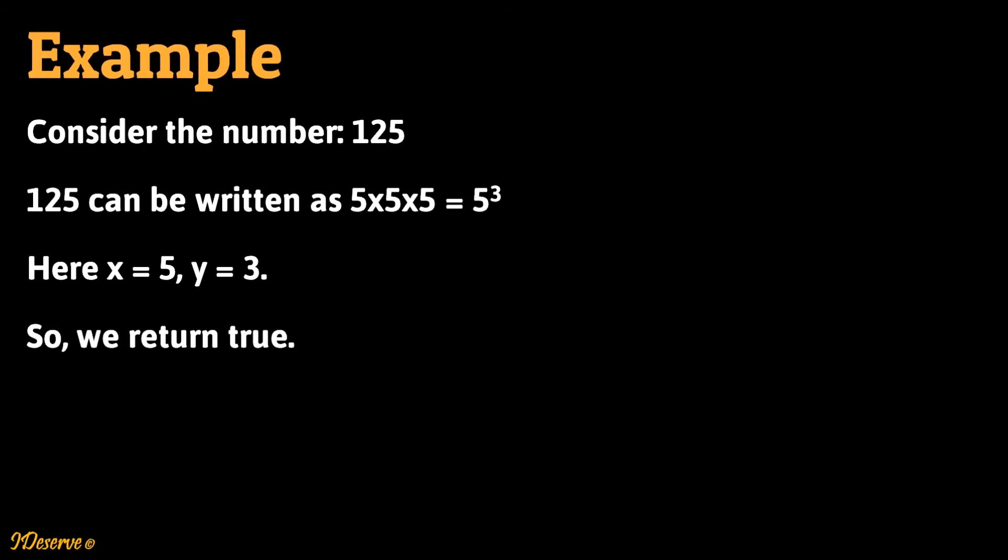Let's take some examples to understand the problem. Consider the number 125. Since 125 can be expressed as x raised to y where x is 5 and y is 3, so we return true.